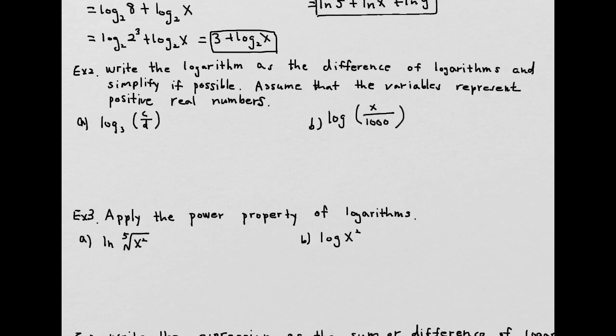Let's try another. This time we're going to stretch out our logarithm using division, which means it will be subtractions. So this is a division, and we know that division changes into subtraction. So this is going to be log₃(c) minus log₃(d). No common base, no matching exponents, so we cannot reduce any further.